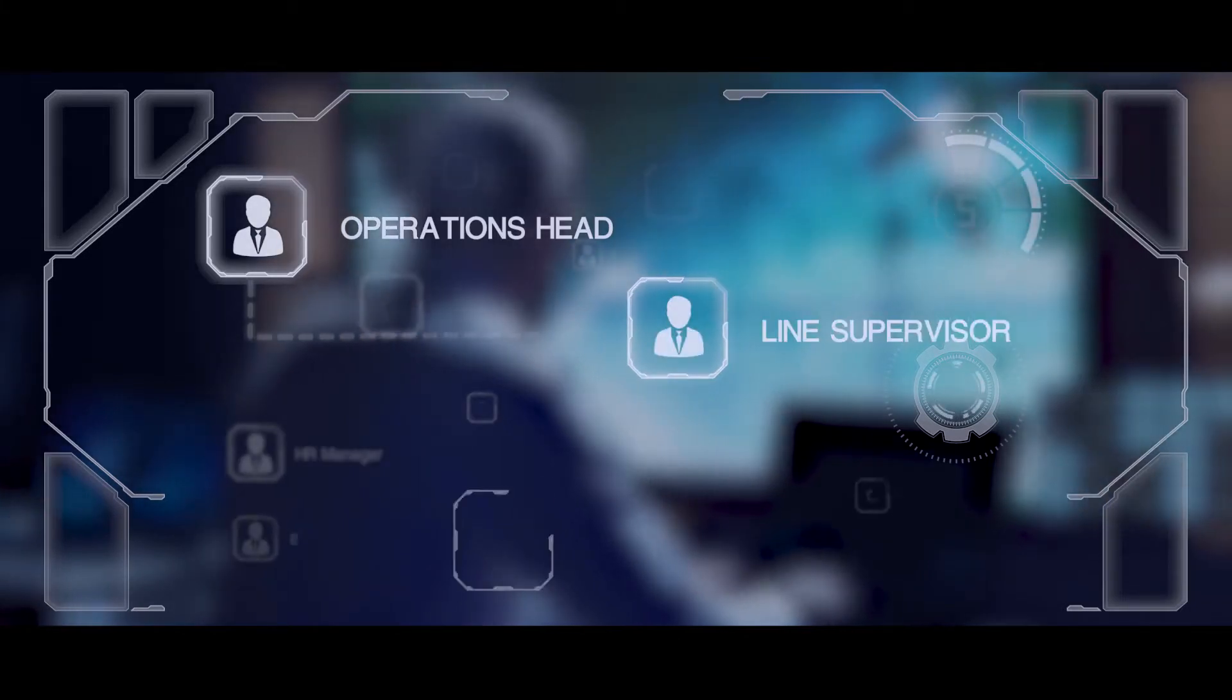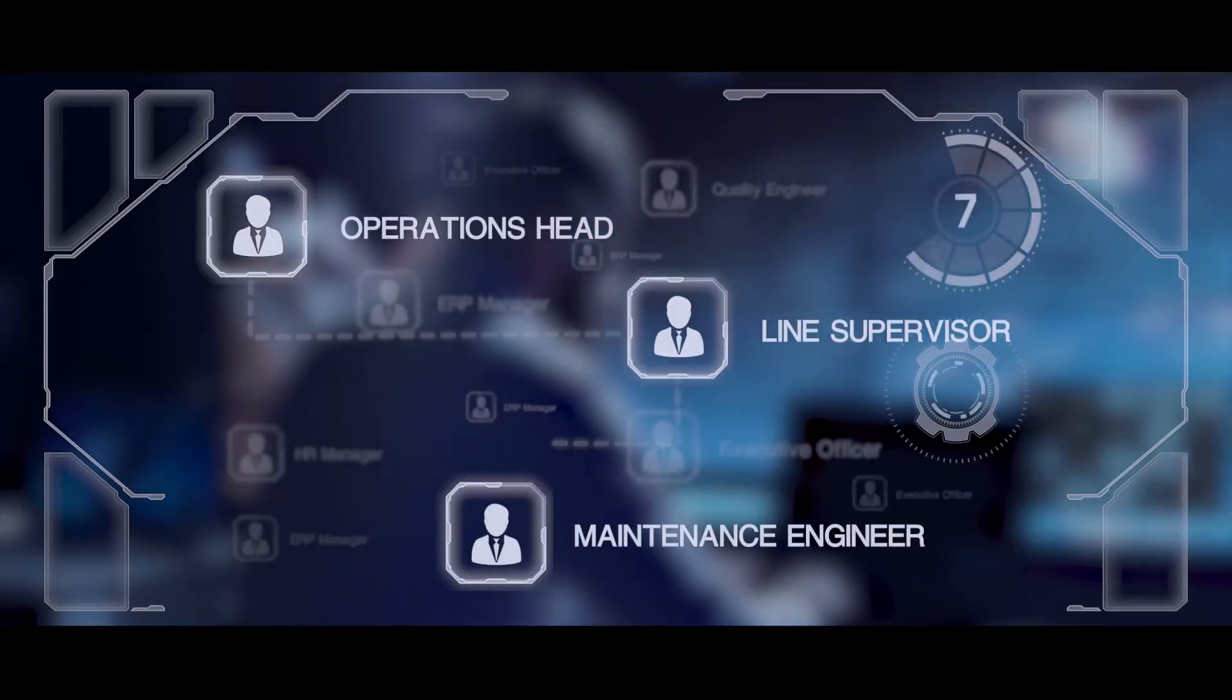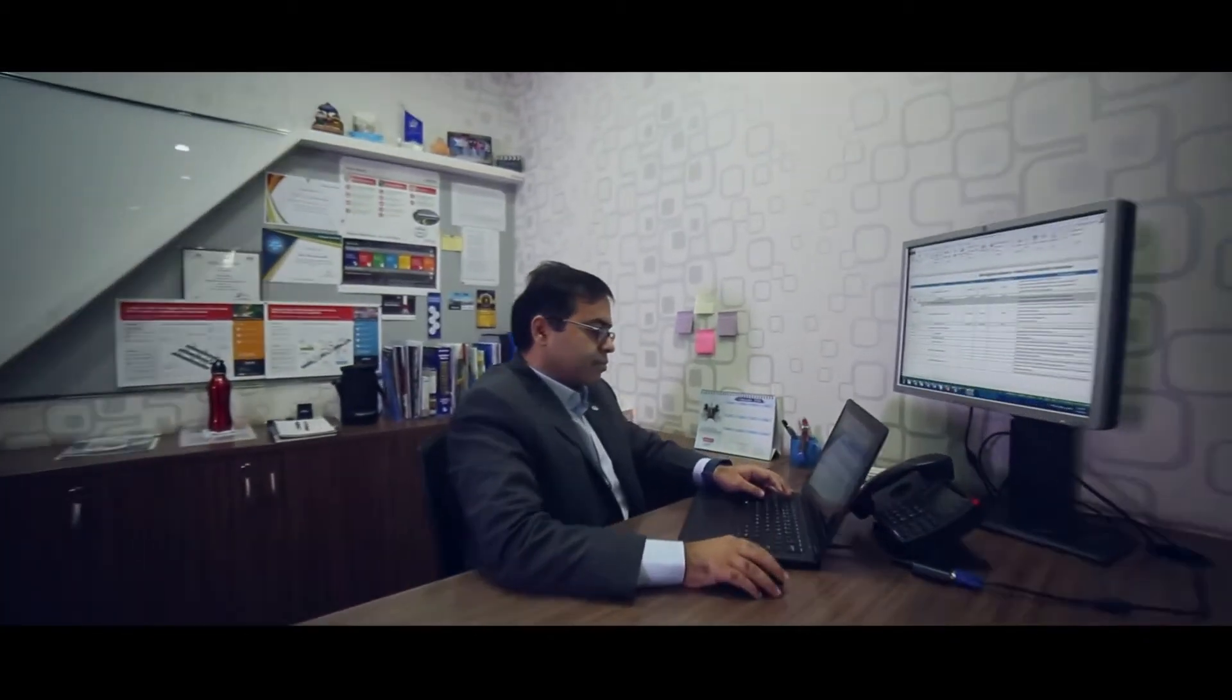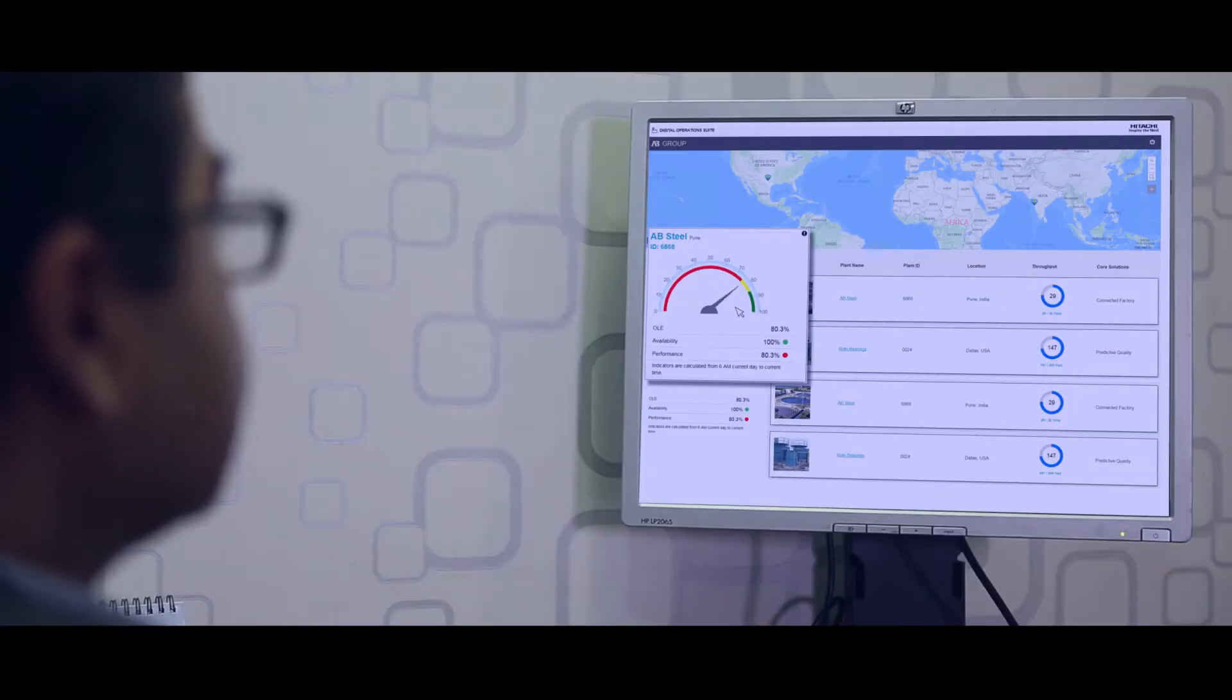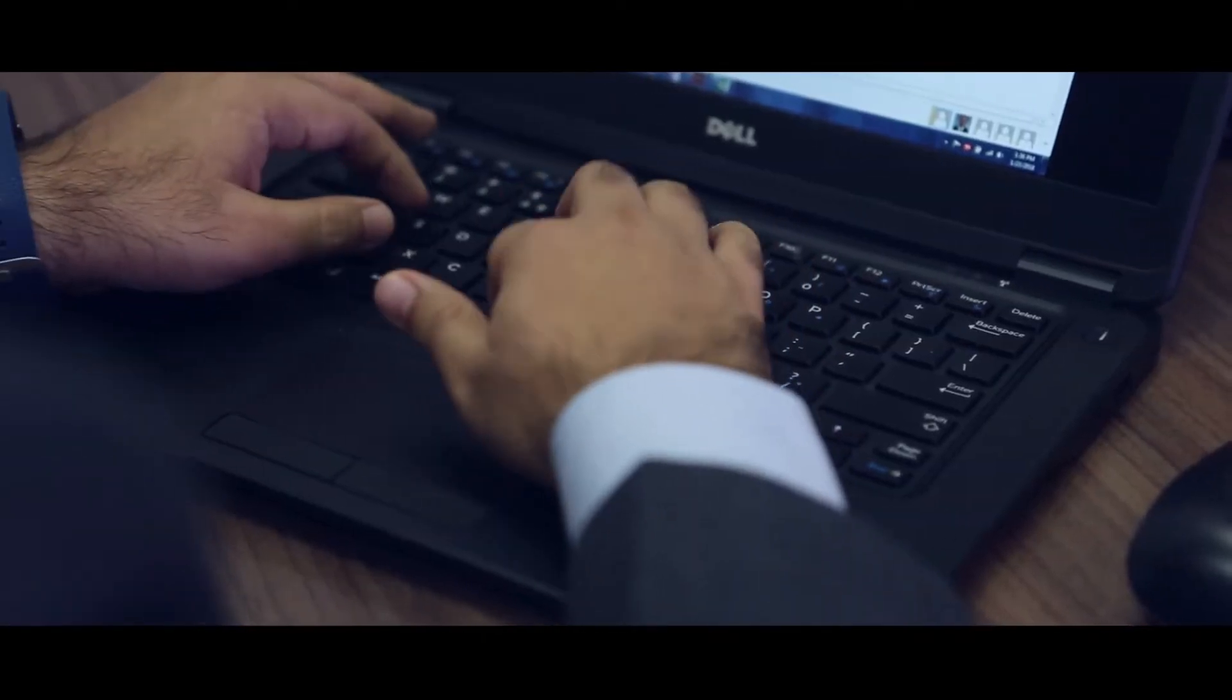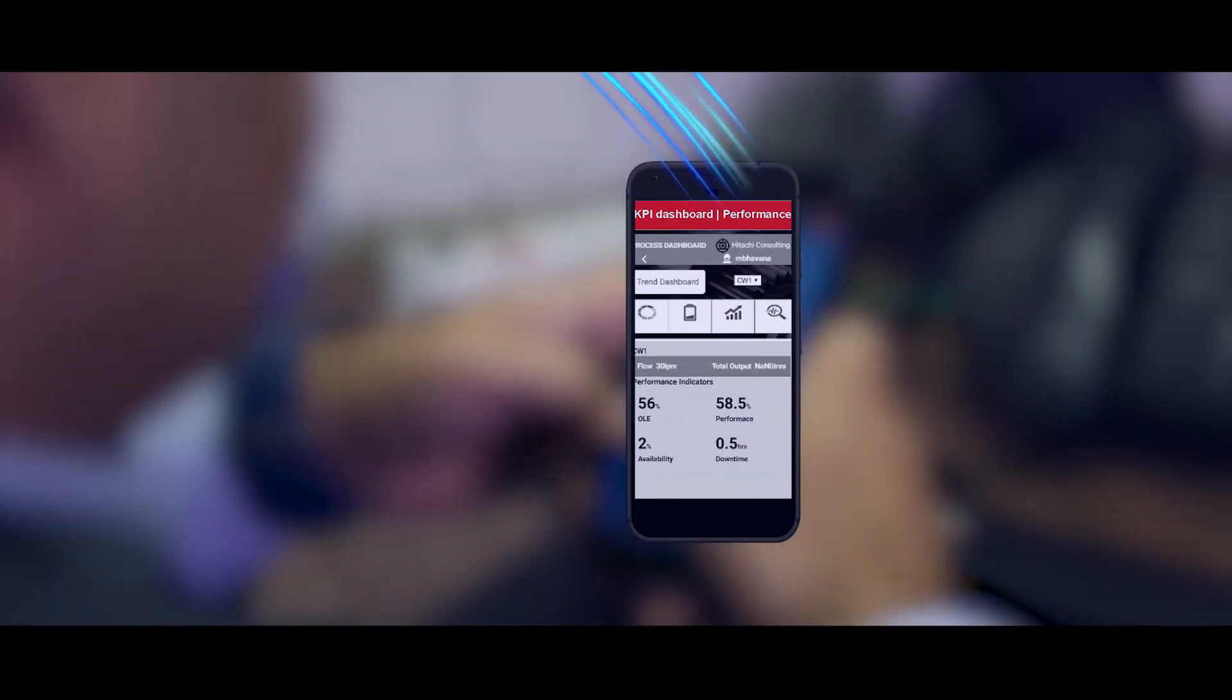Let's look at how Hitachi solutions help stakeholders across an organization. Dev monitors the plants using Hitachi's integrated dashboard view. He notices a performance issue and checks for details in production and maintenance logs. He is satisfied to see the team resolving the issue.